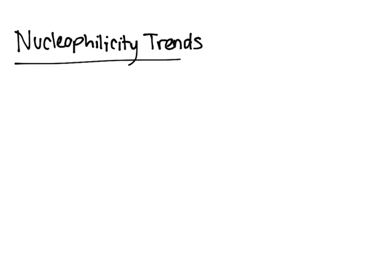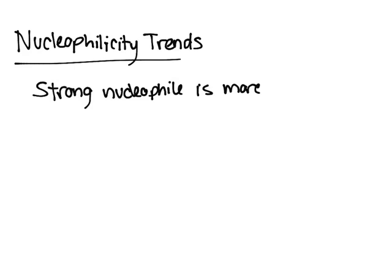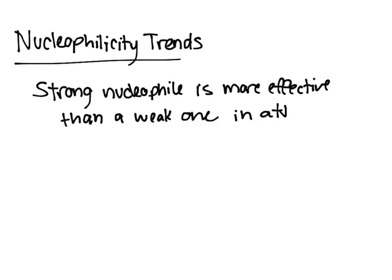In this video, I'm going to talk about nucleophilicity trends — essentially how you can determine if a nucleophile is strong or weak relative to one another. A strong nucleophile is more effective than a weak one in attacking a carbon atom.